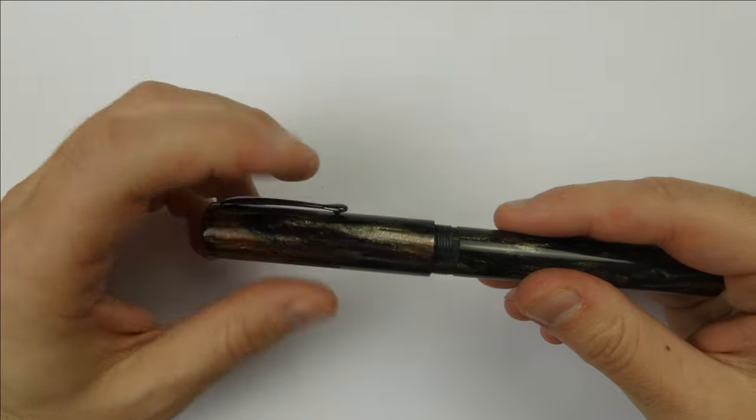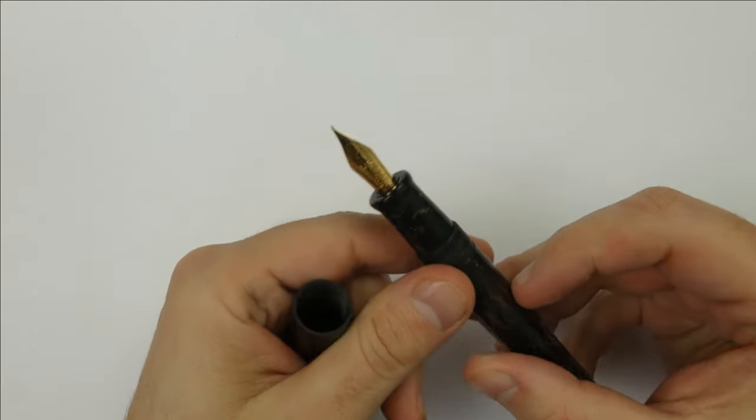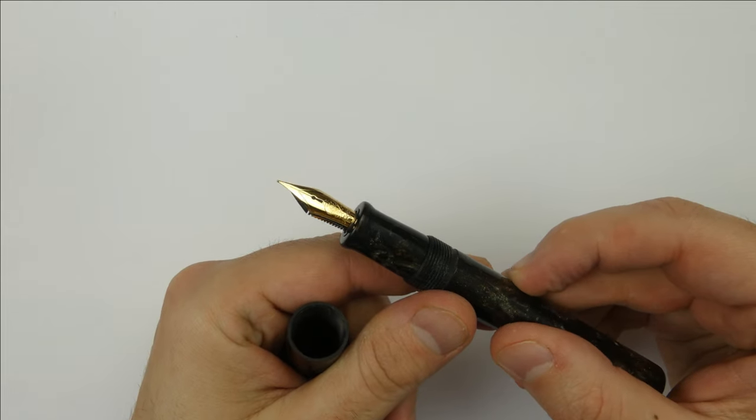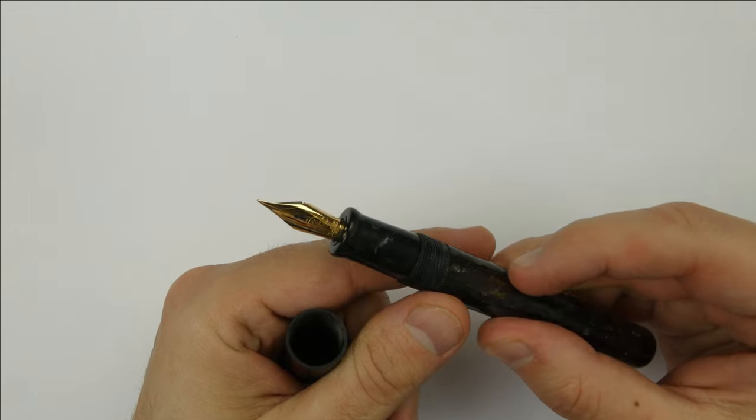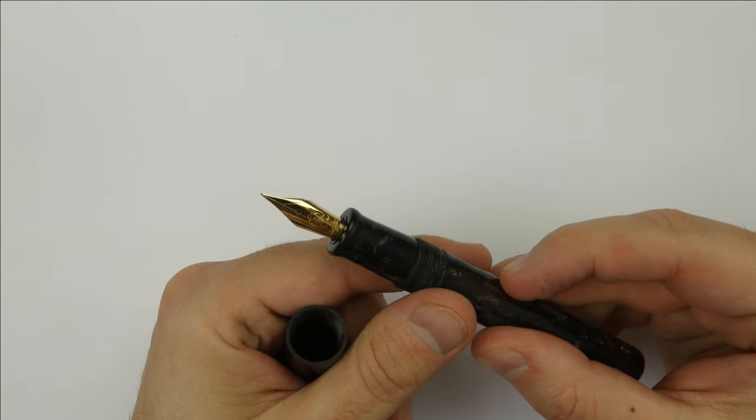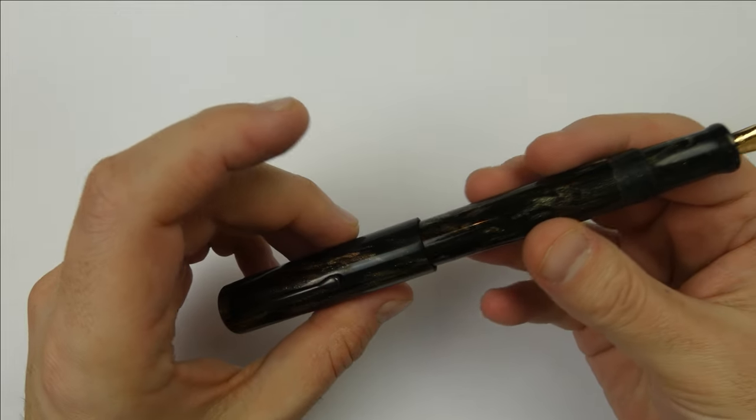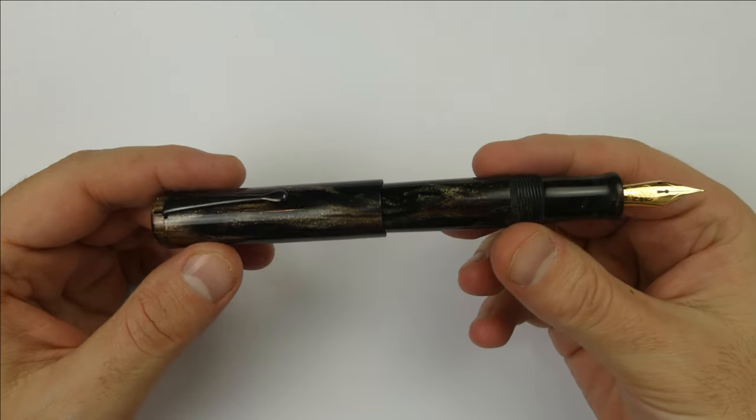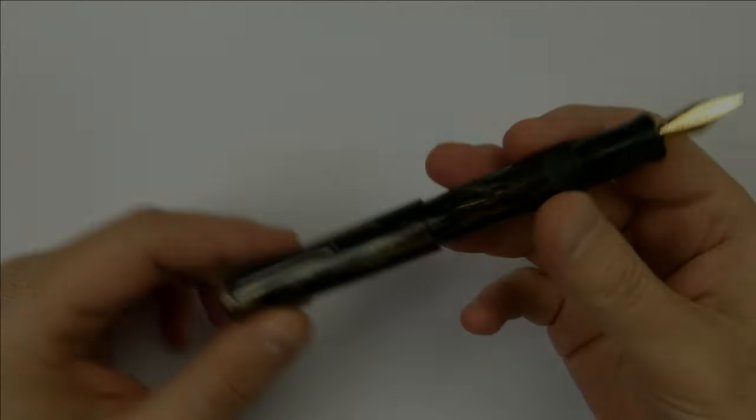And the nib, this is the custom 14k gold flex nib from Carrasco, FP Nibs, based on the Jovo 14k gold nib. This is fabulous. Oh, and one more thing about this pen. I don't use to post my pens, but check this out. How deep this pen posts, and the overall design is even better.